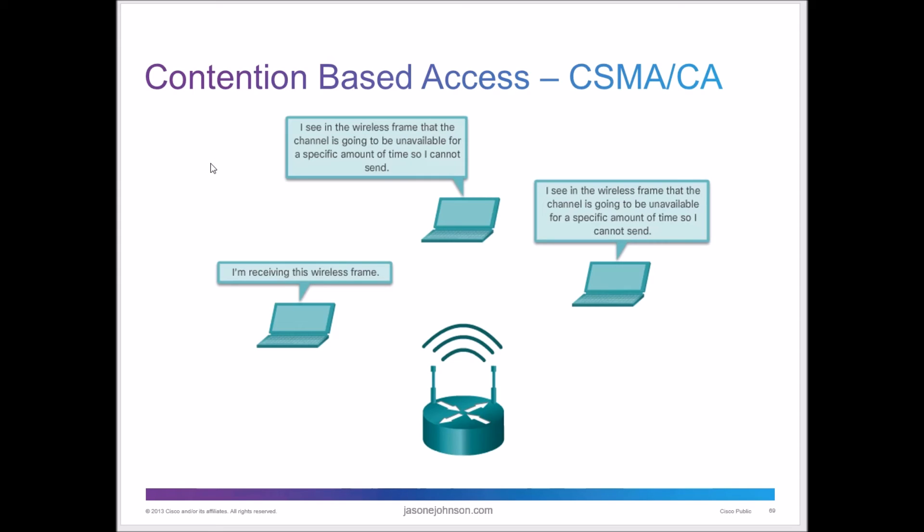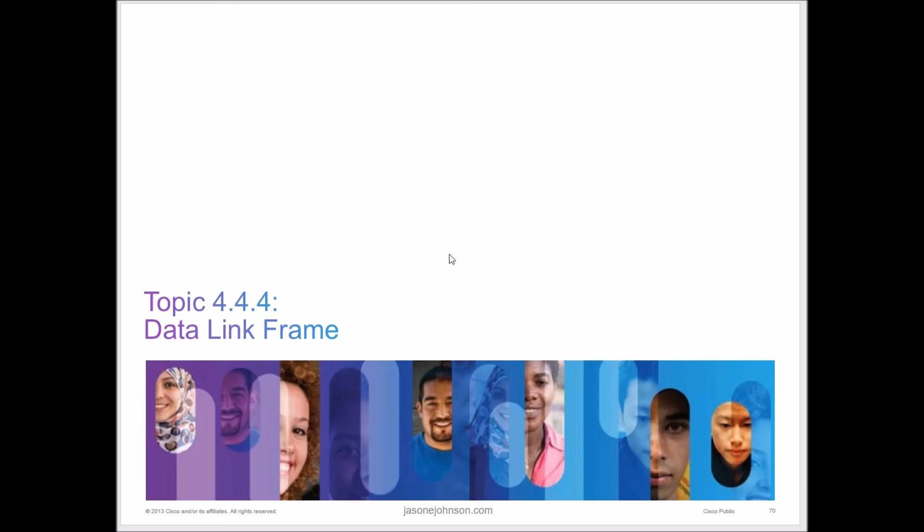And this is wireless CSMA. So if it's receiving the wireless frame, and this one sees the frame, the channel is going to be unavailable for a specific amount of time. So it cannot send. The router in this device might be connected and talking, and so they have to wait their turn. And this is all happening at split seconds. I mean, it's all happening sub seconds. It's happening so fast that you don't see this really anymore with the bandwidths that we have.